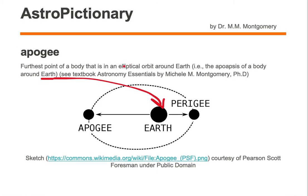Apogee is the furthest point of a body that is in an elliptical orbit around the Earth. Here we're looking at an object such as the Moon making an elliptical orbit around the Earth. Now put an X at the apogee — it's the point in the orbit where the object is furthest from the Earth.